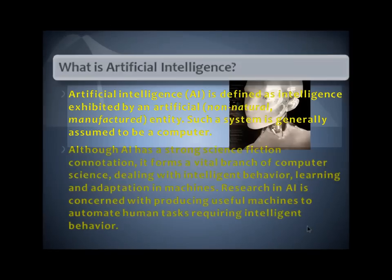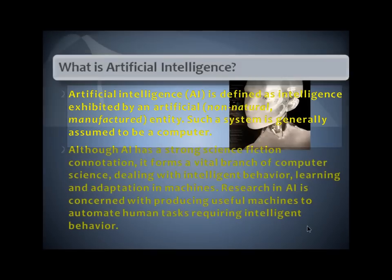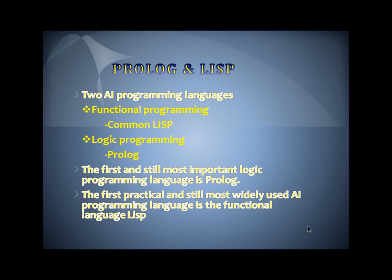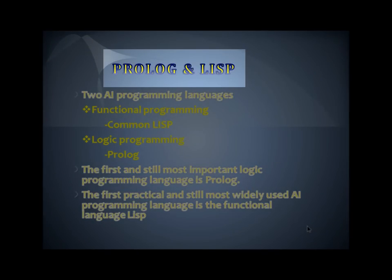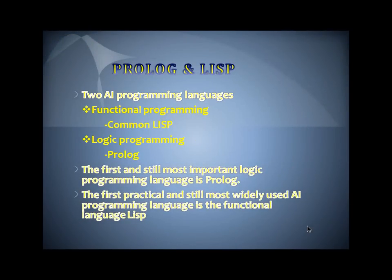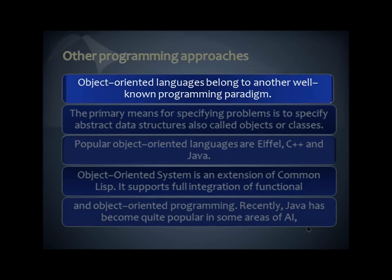We had an overview of what artificial intelligence is — artificial intelligence is the science and engineering of making intelligent machines, particularly intelligent computer programs. We also had an overview of artificial intelligence languages. When considering AI languages, we mainly focused on Prolog and Lisp, and discussed the advantages and disadvantages of using Prolog and Lisp in artificial intelligence languages.